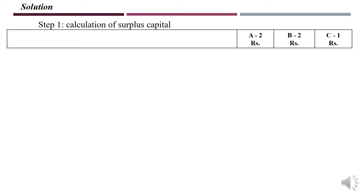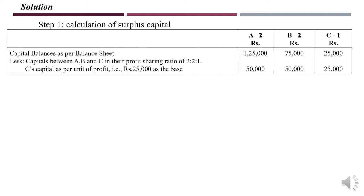The opening capital balance as per the balance sheet is: A — 1,25,000; B — 75,000; C — 25,000. Now let us find the capital as per unit of profit. We divide each partner's capital by their respective profit sharing ratio to find who has the least capital per unit of profit.